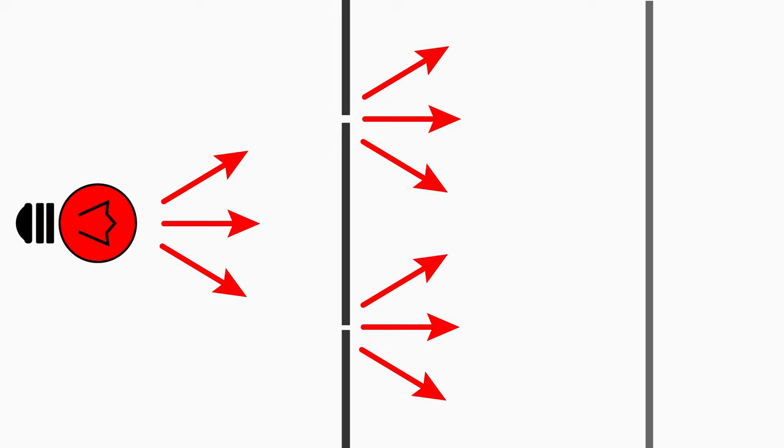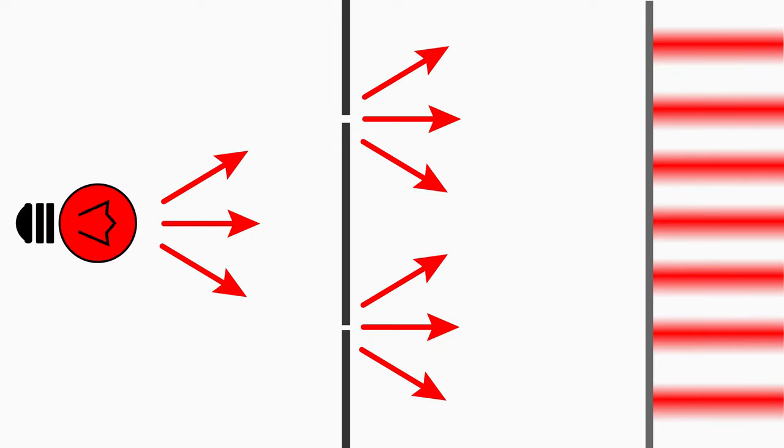Then it lands on the screen and creates alternating bright and dark fringes of light. It produces the same pattern as a water wave passing through two slits.